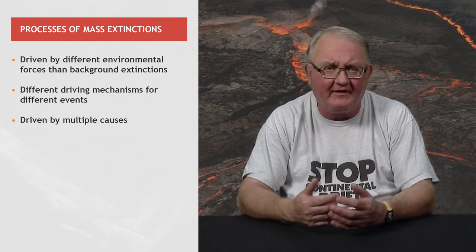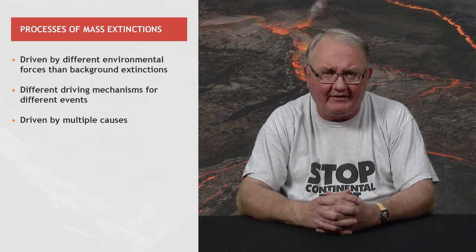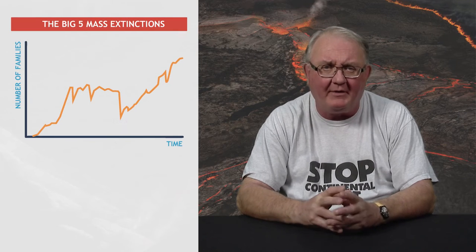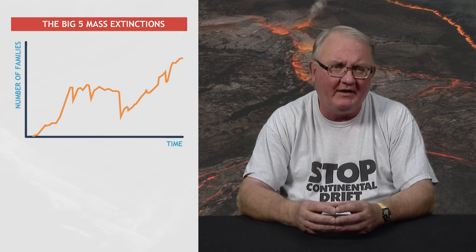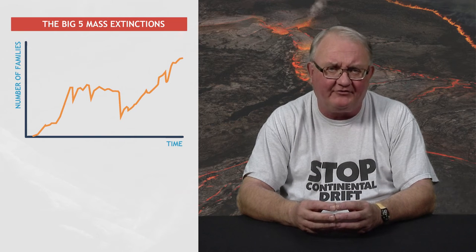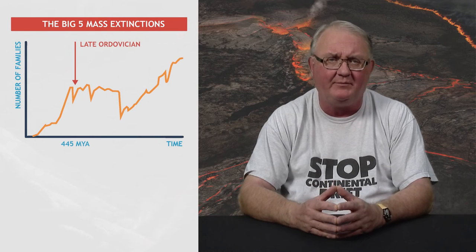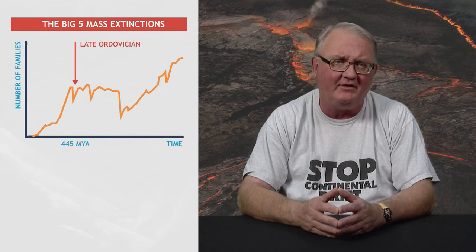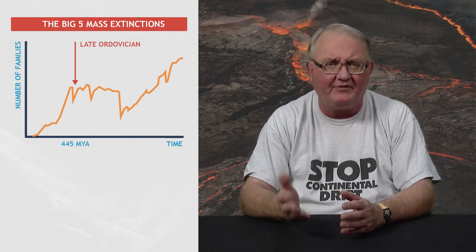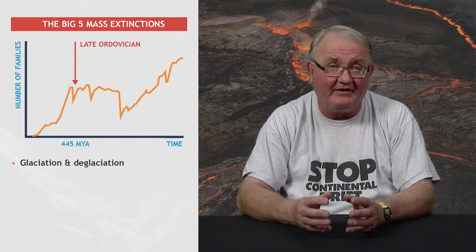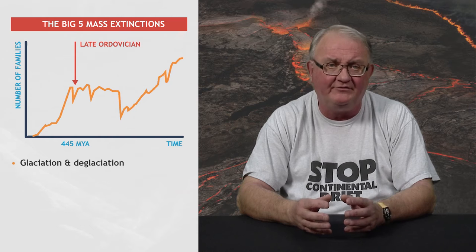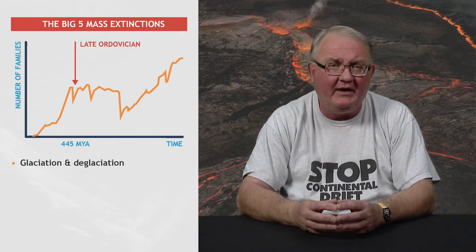There are five major mass extinctions that can be recognised in the rock record, amongst many other less significant peaks of extinction. The late Ordovician extinction, about 445 million years ago, coincided with a period of major glaciation, followed after half a million years by a deglaciation. The glaciation drove such environmental changes as a global drop in temperature and an associated drop in sea level.